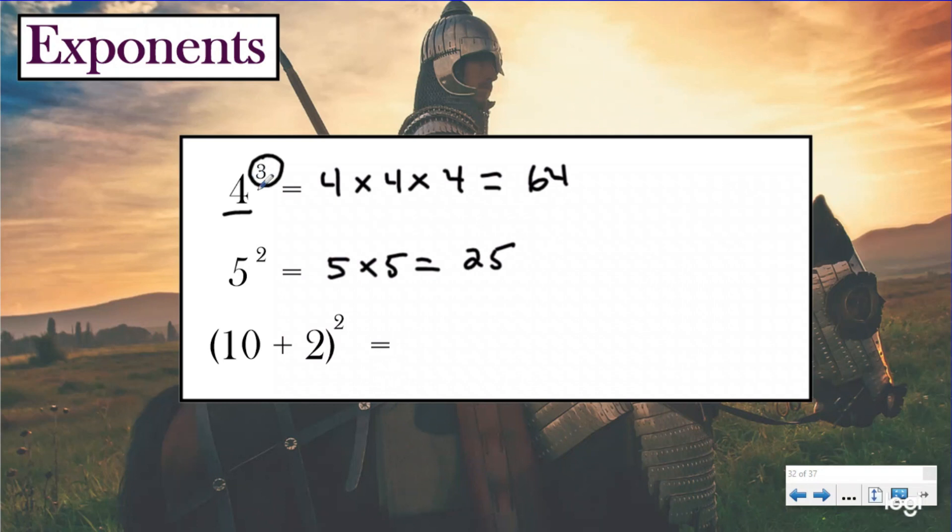Here I actually have parentheses. I have 10 plus 2 raised to the second power. You want to group the parentheses together because what this is saying is whatever's inside the parentheses, you're going to raise that to the second power. So really this is saying 12 to the second power, which is 12 times 12, which is 144. So 10 plus 2 in parentheses raised to the second power or squared equals 144.